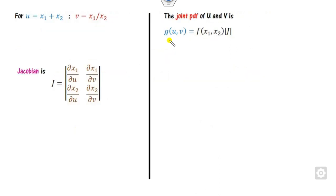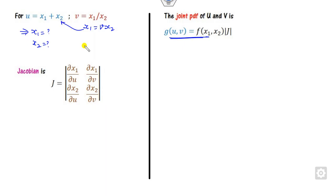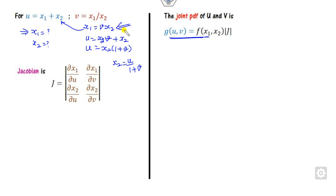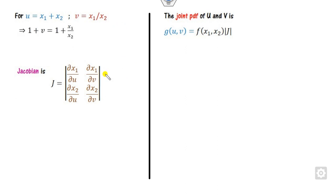Since x1 and x2 are independent, we can find their joint PDF as shown. The transformation is given, so you find the joint PDF using the Jacobian. Your target is to find x1 and x2 in terms of u and v. You can find x1 from one equation: this gives x1 = v · x2.